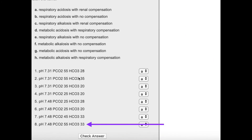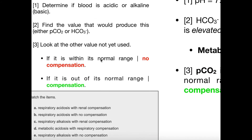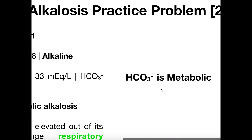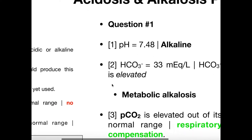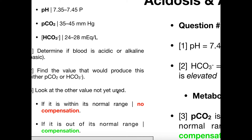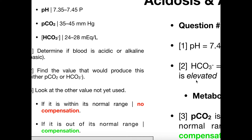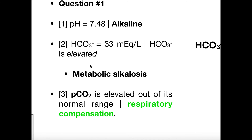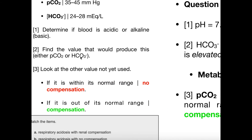We look at the other value: bicarbonate is 33. The normal range is 24 to 28, so 33 is above the upper limit. Bicarbonate is a base, so elevated bicarbonate causes alkalosis. Elevated CO2 causes acidosis; elevated bicarbonate causes alkalosis. Because the bicarbonate level of 33 is above the upper limit and is contributing to the alkalosis, and bicarbonate is metabolic, we have metabolic alkalosis.